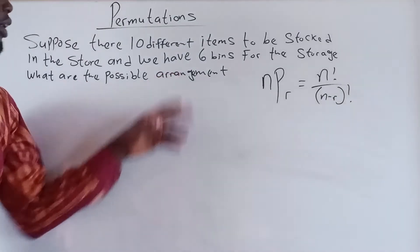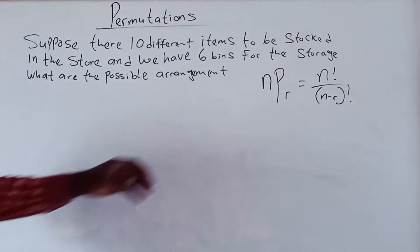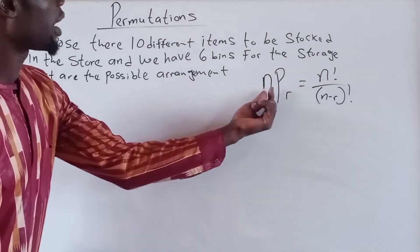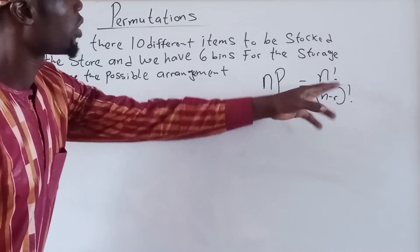What are the possible arrangements? Now, the permutation. So this is the formula for permutation. N permutation r. Now we go to N factorial.